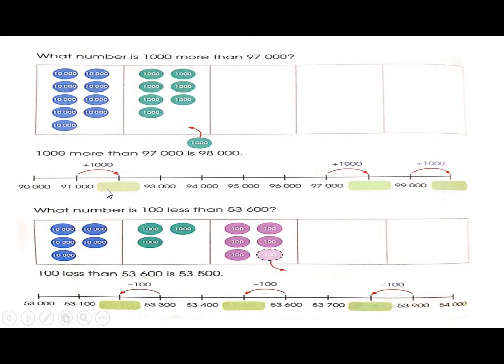91,000 and then 92,000, 93,000, 94,000, 95,000, 96,000, 97,000. Here we have 98,000, then 99,000, and then 100,000.